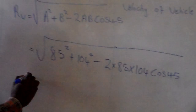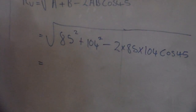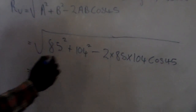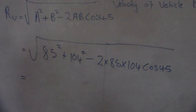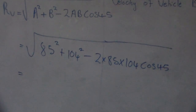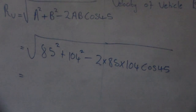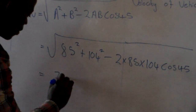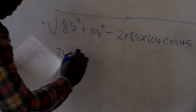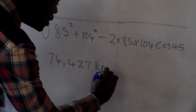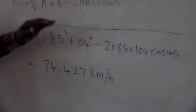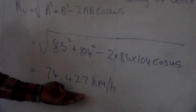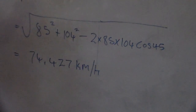The result gives us the relative velocity of A relative to velocity B. The answer is 74.427 kilometers per hour. Remember, we need to solve for both the magnitude and the direction. This value of 74.427 km/h is the magnitude of the resultant relative velocity.